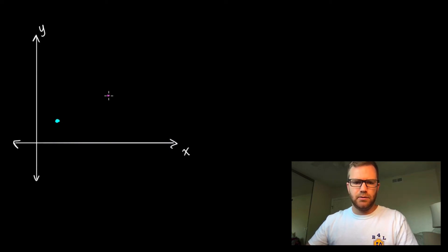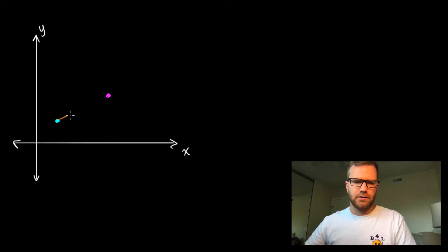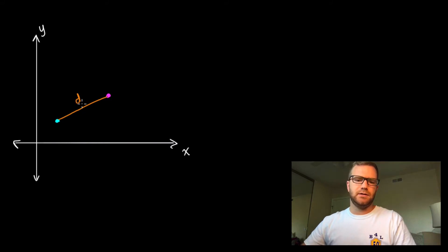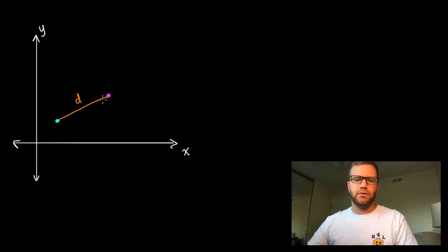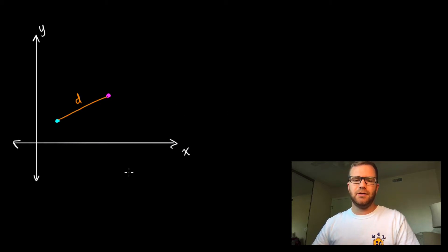Let's say we're given these two points and we want to find the linear distance between them. We'll call that distance D. We have two options: we can either use the distance formula, which requires us to know the ordered pairs for both points and plug them into the formula, or we could use the Pythagorean Theorem.